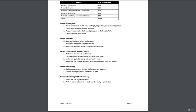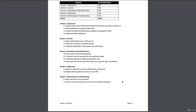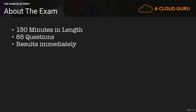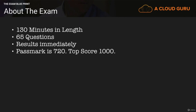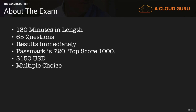And then we have monitoring and troubleshooting — write code that can be monitored and perform root cause analysis on faults found in testing or production. About the exam itself: it's 130 minutes in length, we have 65 questions, you will get your results immediately, the pass mark is 720 and the top score is 1,000, it's going to cost you $150 US, it's multiple choice, and the qualification is valid for two years. You're going to have a whole bunch of scenario-based questions. So without further ado, let's go ahead and get started.